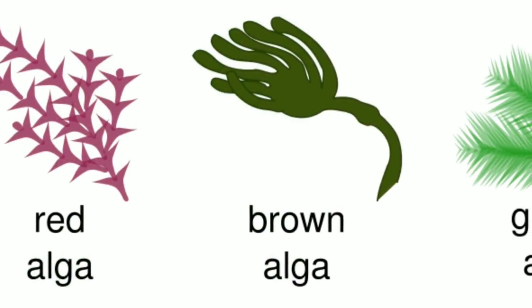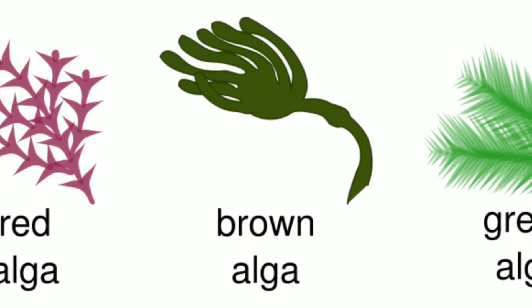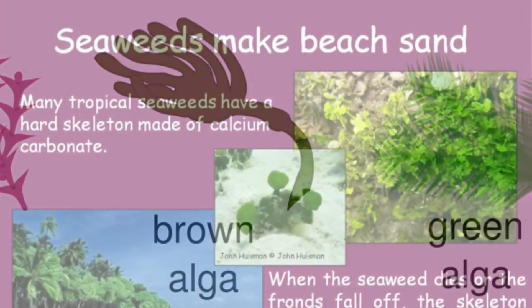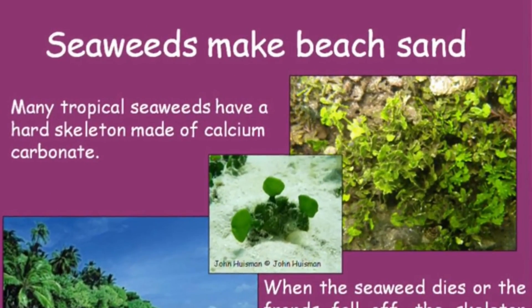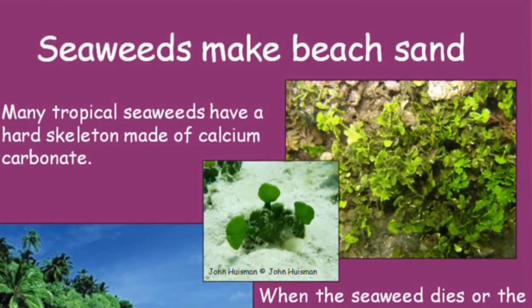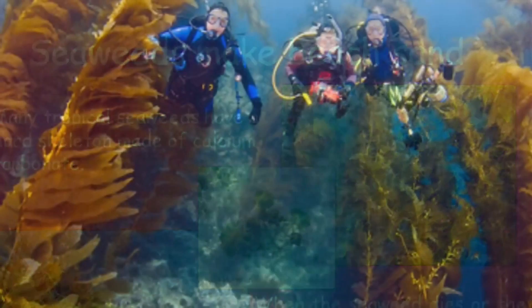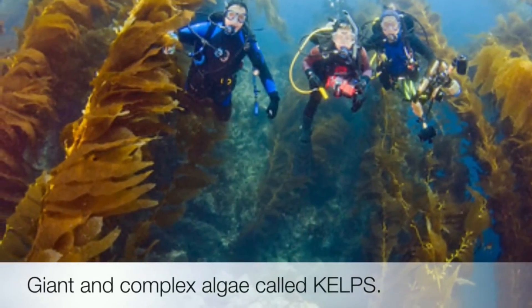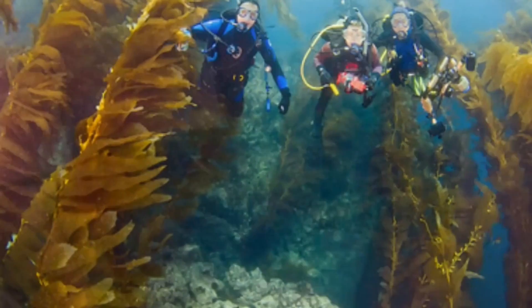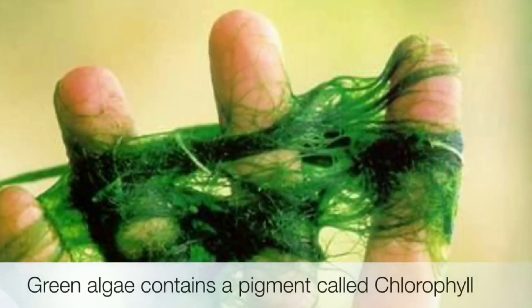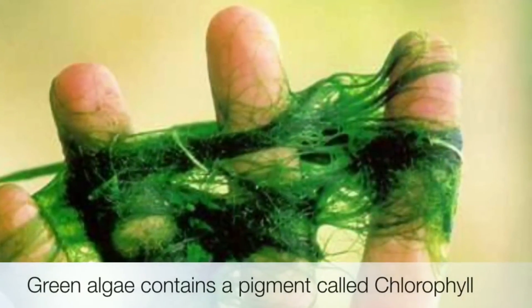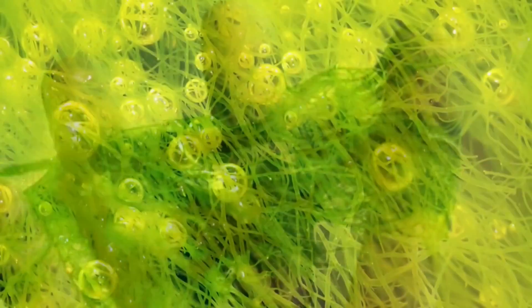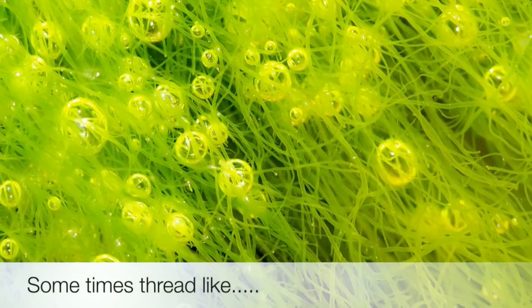There are three types of algae: Red algae, Brown algae, and Green algae. Some complex forms of algae found in the ocean are commonly called kelps. Green algae contain the pigment called chlorophyll, which is responsible for the green color and also photosynthesis.